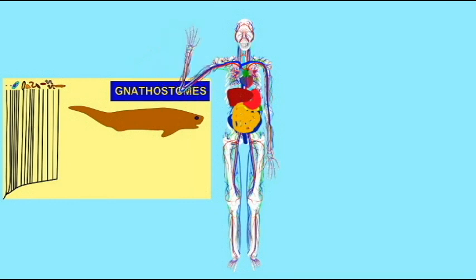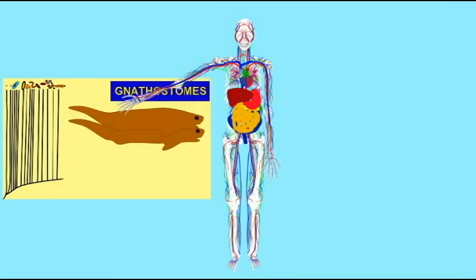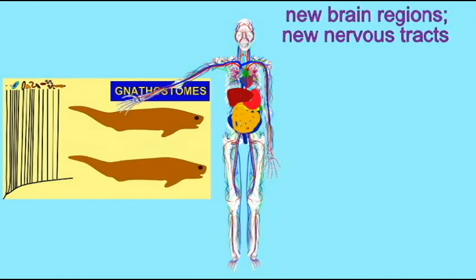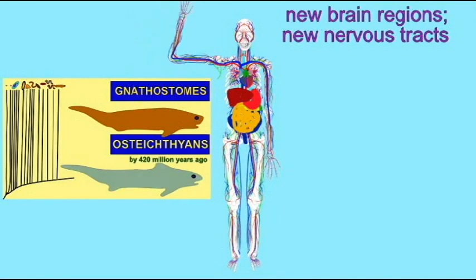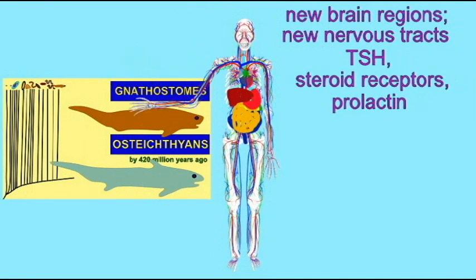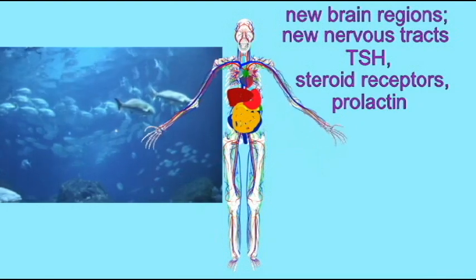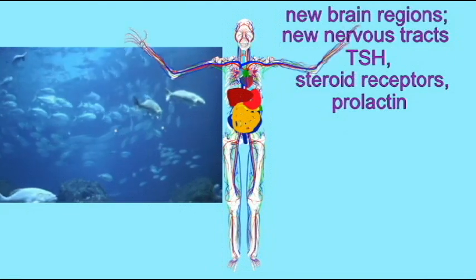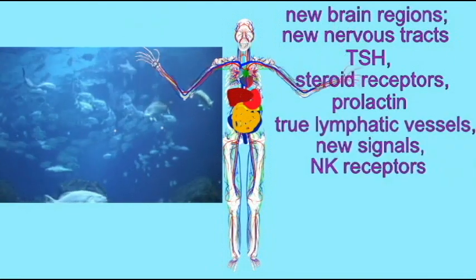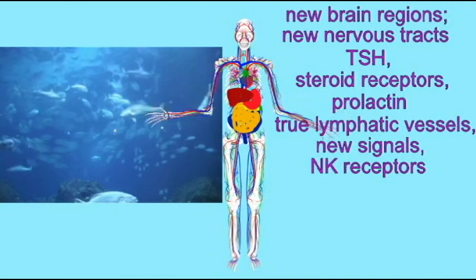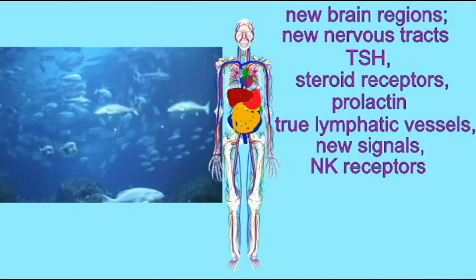There are many other features of the body which Osteichthians share. Osteichthians share a number of new regions of the brain and new tracts of the brain and spinal cord. The endocrine system developed the hormone TSH, additional steroid hormone receptors, and prolactin became involved in additional physiological processes. The lymphatic system developed true lymphatic vessels, new signaling molecules, and natural killer cell receptors.